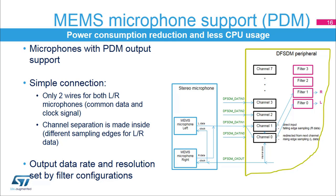The MEMS microphone provides a pulse density modulated (PDM) data signal, whose format is theoretically like the sigma-delta bit stream from the sigma-delta modulator. The MEMS microphone has stereo support if two microphones are connected in parallel with common data and clock signals: rising clock edge samples left audio data, falling clock edge samples right audio data. In the DF-SDM configuration, channel 0 uses redirected input from channel 1, channel 1 uses direct input, and left versus right channel data are separated by selecting either the rising or falling edge in the SPI configuration. The clock signal is provided by the DF-SDM clock output, as MEMS microphones are slaves and need an external clock.